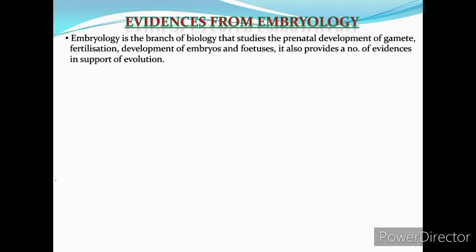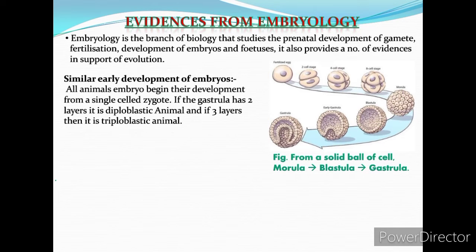The first question about embryology is: what do we understand by evolution from embryology? Embryology is the branch of biology that studies prenatal development from gamete fertilization through development of embryos and fetuses. It also provides a number of evidences in support of evolution. All animal embryos develop from a single-celled zygote, forming first a solid ball of cells — shown in the picture divided into morula, blastula, and gastrula.